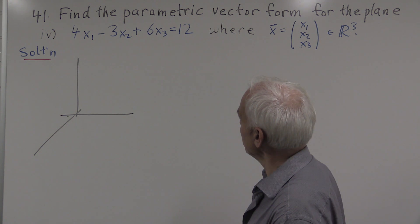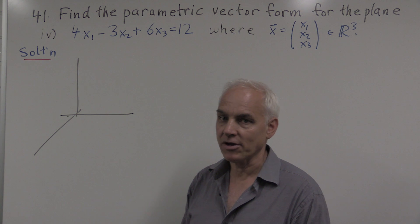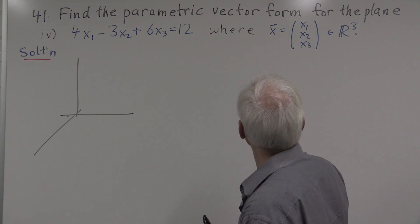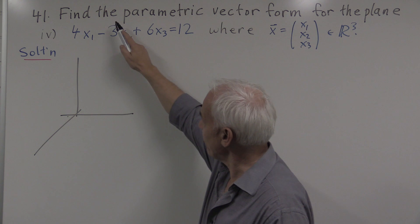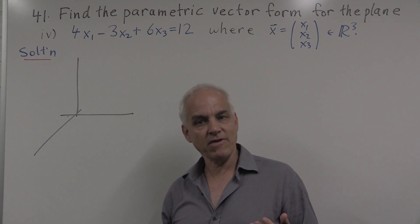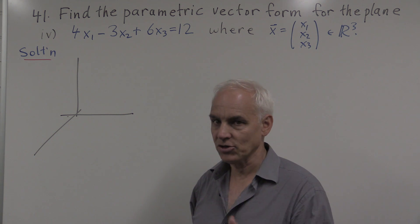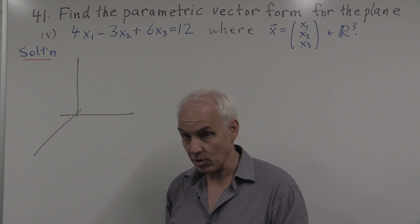But we're asked to find the parametric or a parametric vector form for the plane. Probably we should emphasize that a parametric vector form is in general not unique. There are lots of choices, so your answer and your neighbor's answer may very well be different.